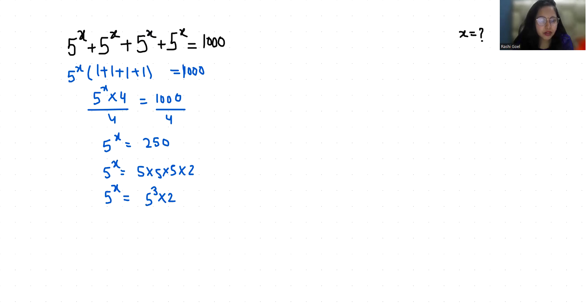According to the exponent rule, x^m divided by x^n equals x^(m - n), so this equals 2. Now I'm taking log on both sides, so log 5^(x - 3) equals log 2.